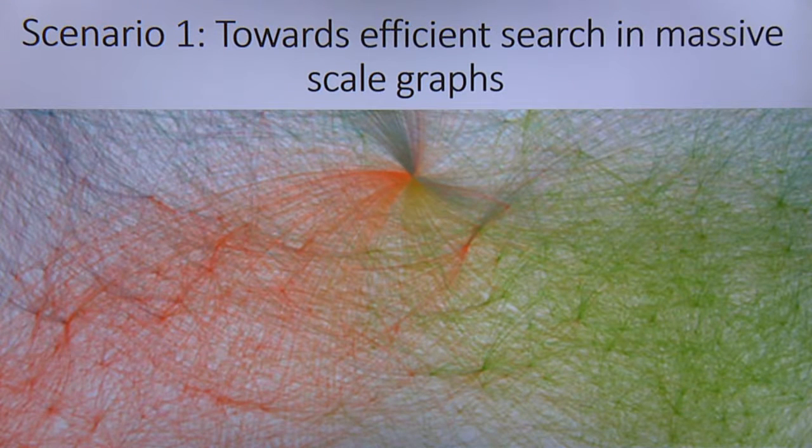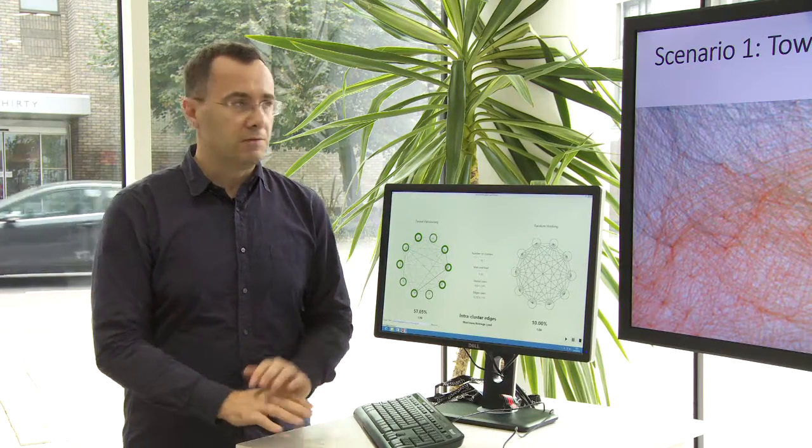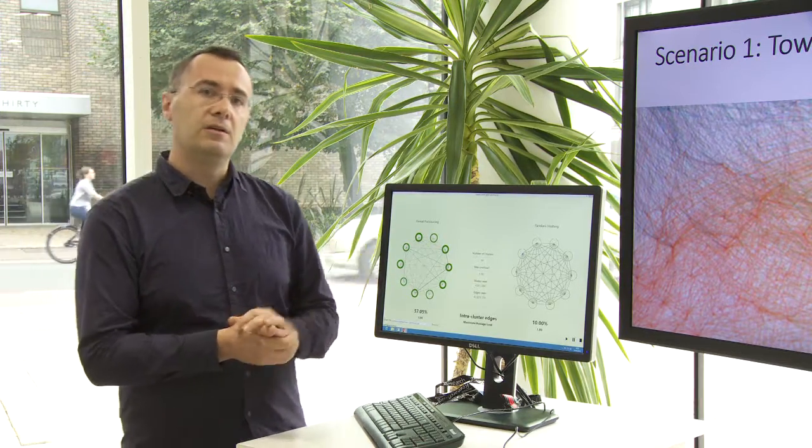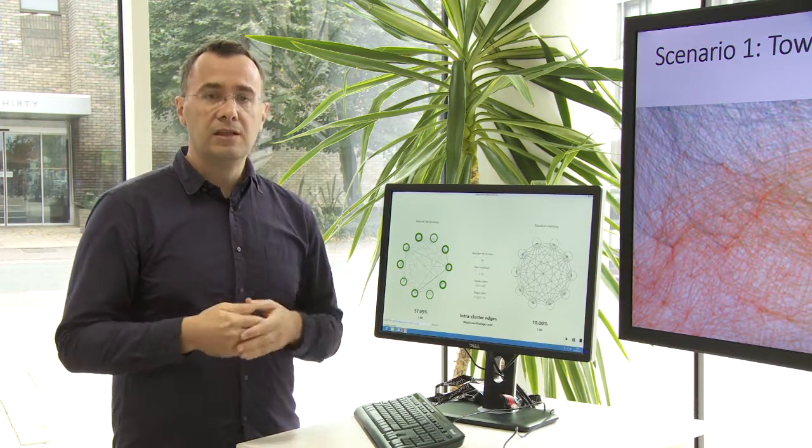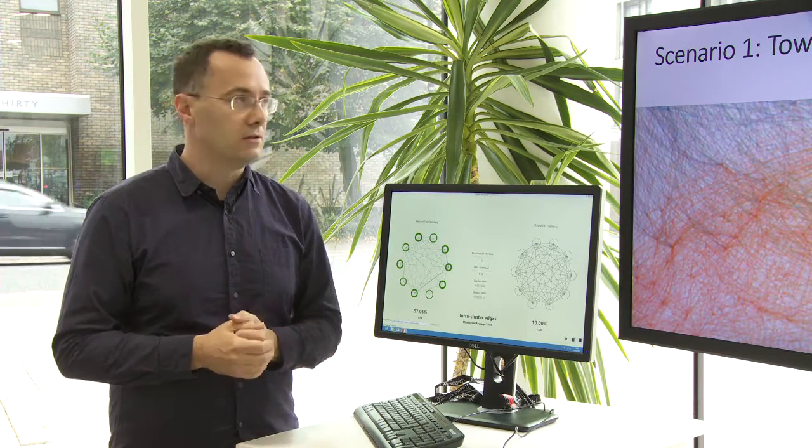This graph data might be a social graph, for example a LinkedIn network, or could be some knowledge graph like Facebook graph search or something of that kind. Or maybe in Office we have some use of knowledge graphs. If you use Bing, there's going to be some results displayed making use of a large-scale knowledge graph.